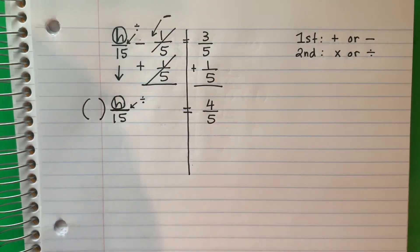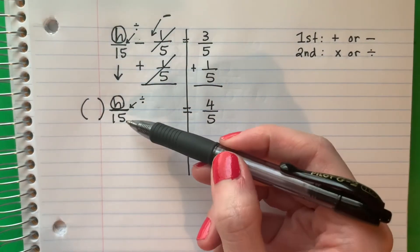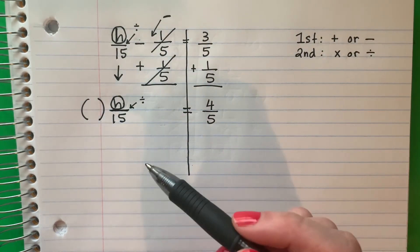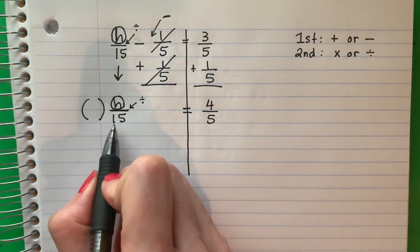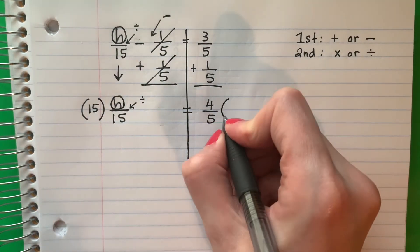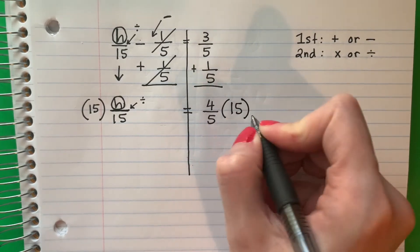So I will use parenthesis. Paréntesis. Whatever is down, I put inside of the parenthesis. Que está abajo, voy a poner en los paréntesis. So the denominator is 15. I will put 15 here. And I will copy parenthesis. 15, parenthesis.